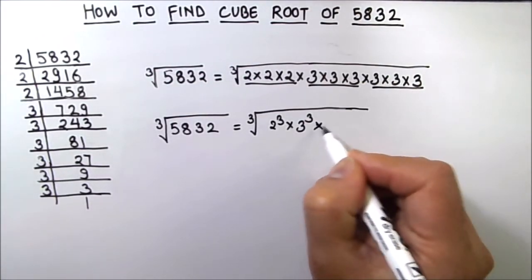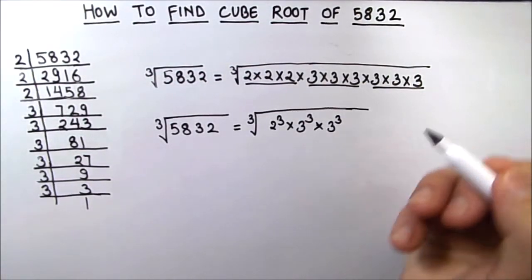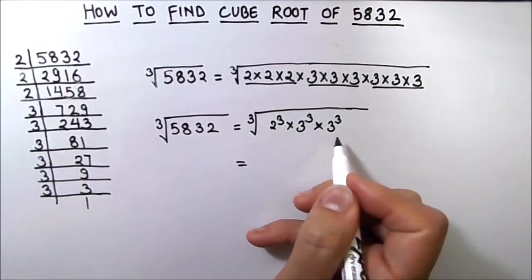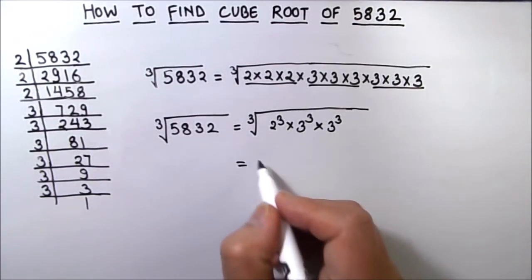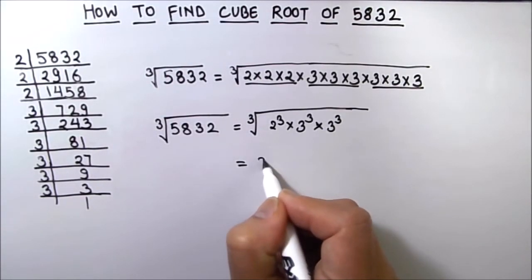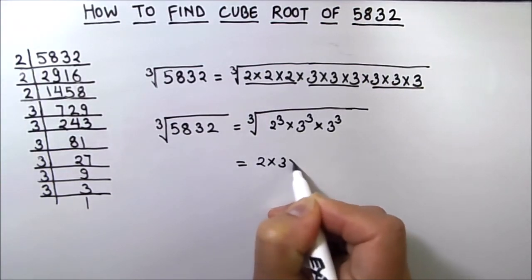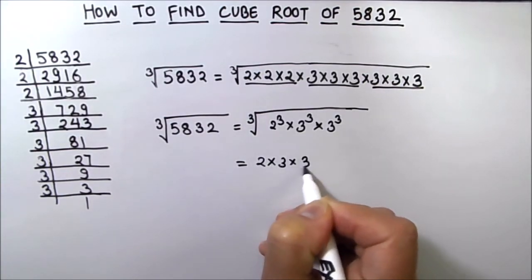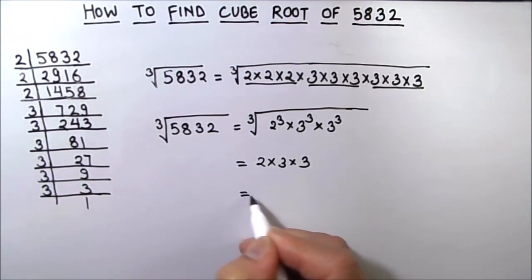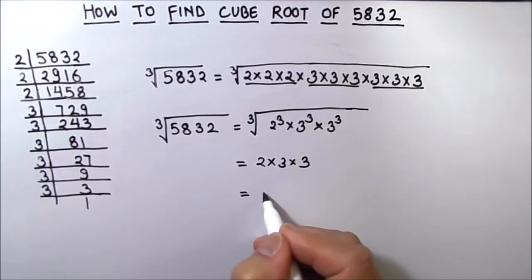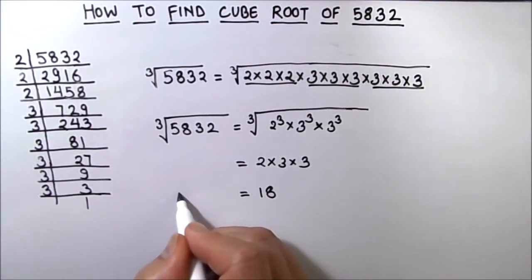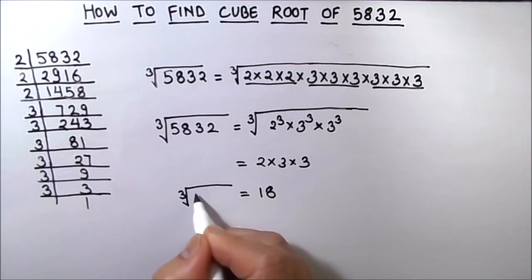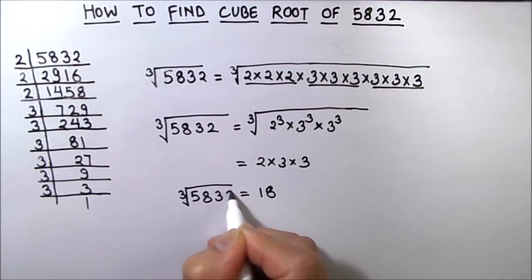As these numbers are in cube form, they can come out of the cube root sign. So this becomes 2 times 3 times 3, which is equal to 18. So the cube root of 5832 is 18.